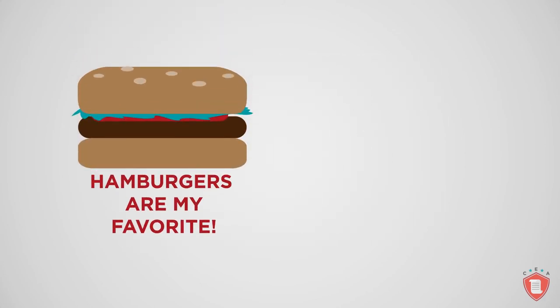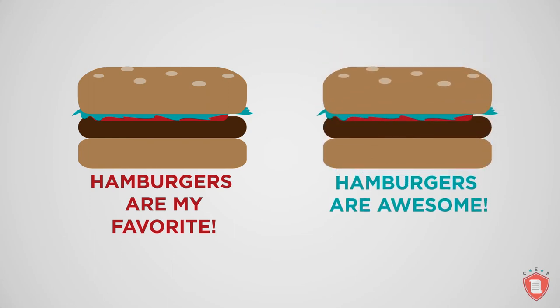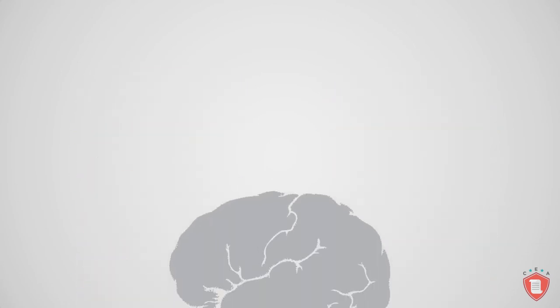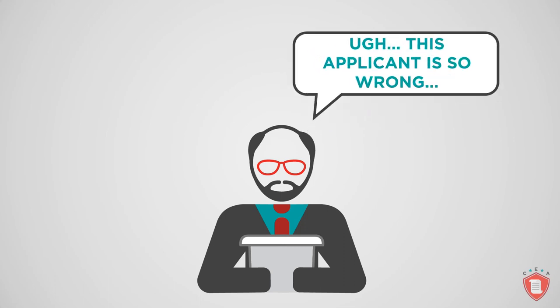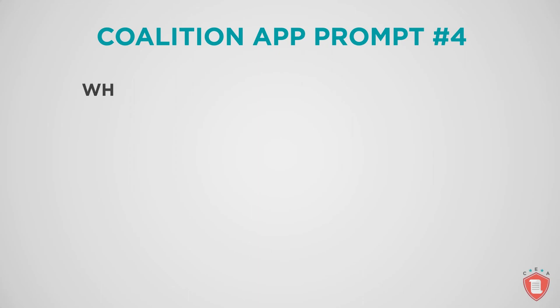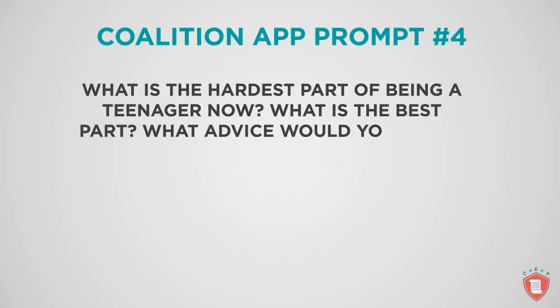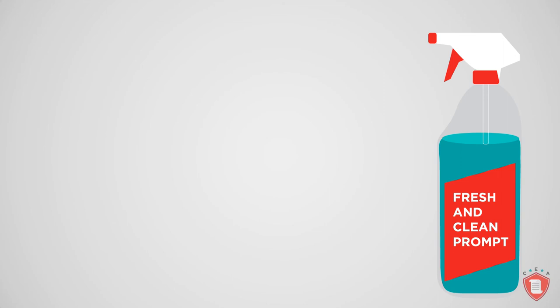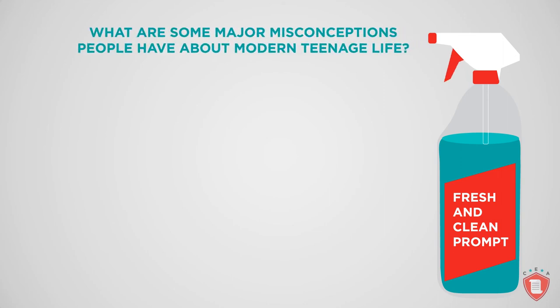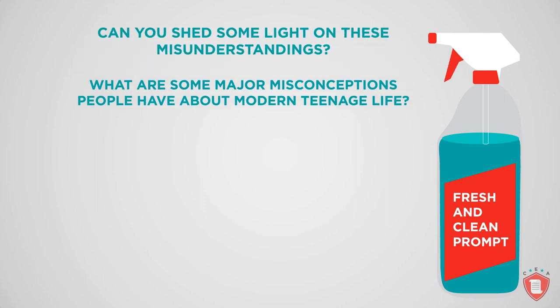The range of beliefs that can be challenged is as wide as you make it — something from the fabric of your values driven by passionate feelings, or something widely accepted and driven by societal norms. When brainstorming, it's probably a good idea to stay away from controversial subjects like politics; you never know who will pick up your application and you don't want personal bias about hot-button issues getting in the way of a fair assessment. Coalition prompt number four reads: "What is the hardest part of being a teenager now? What is the best part? What advice would you give a younger sibling or friend?" This is the freshest and most different prompt from any existing Common App question.